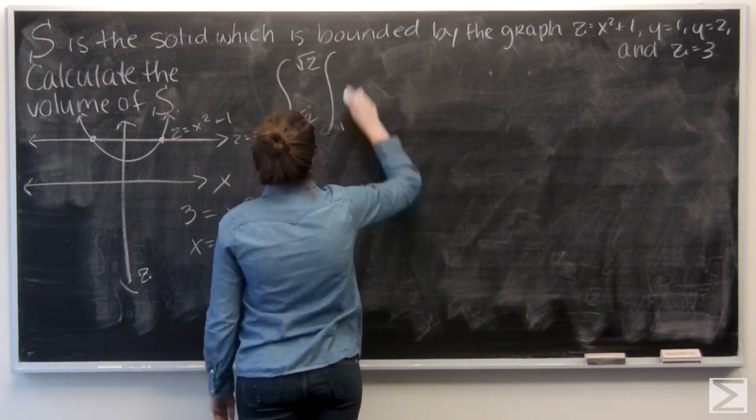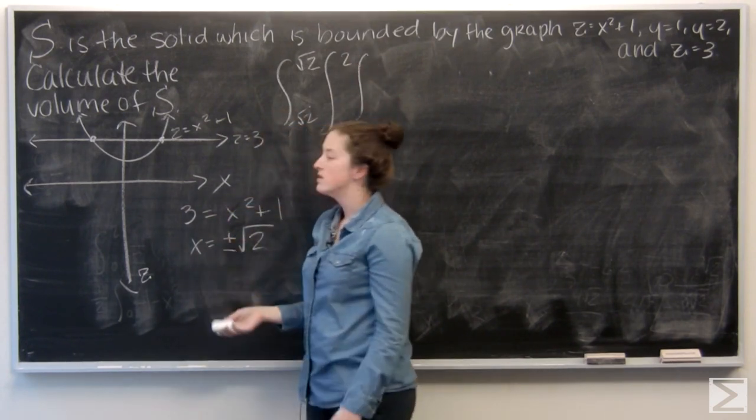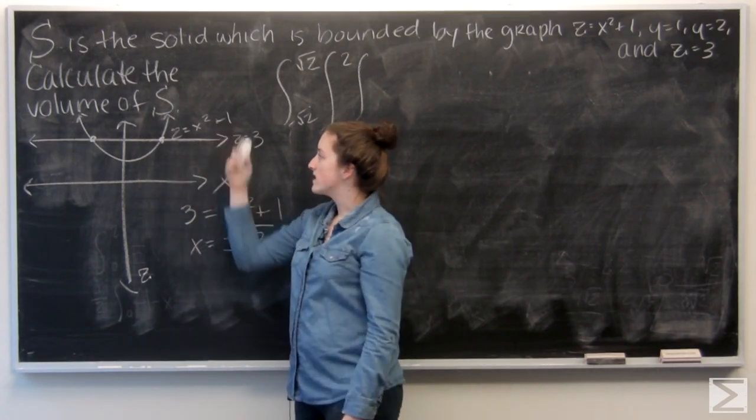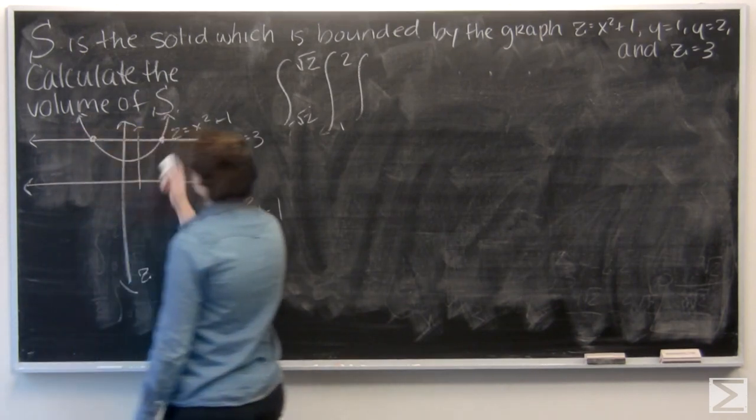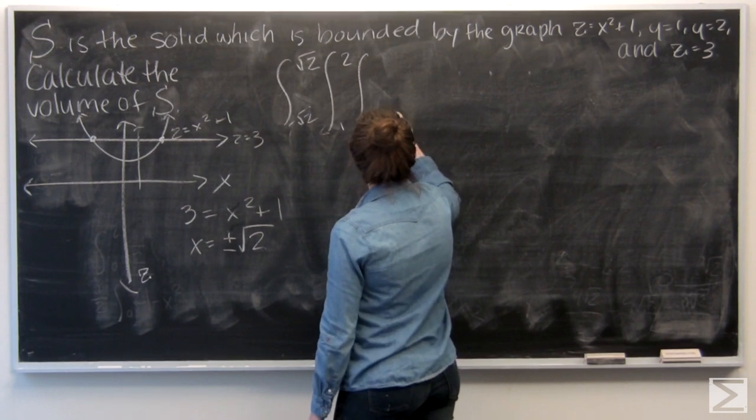And then y is from 1 to 2. Now I want to set my z bounds. Remember, we go lower bound to upper bound. So here the x squared plus 1 is actually on the bottom. So if I think about drawing a line up like this, I hit x squared plus 1 before I hit 3. So that needs to be on the bottom.